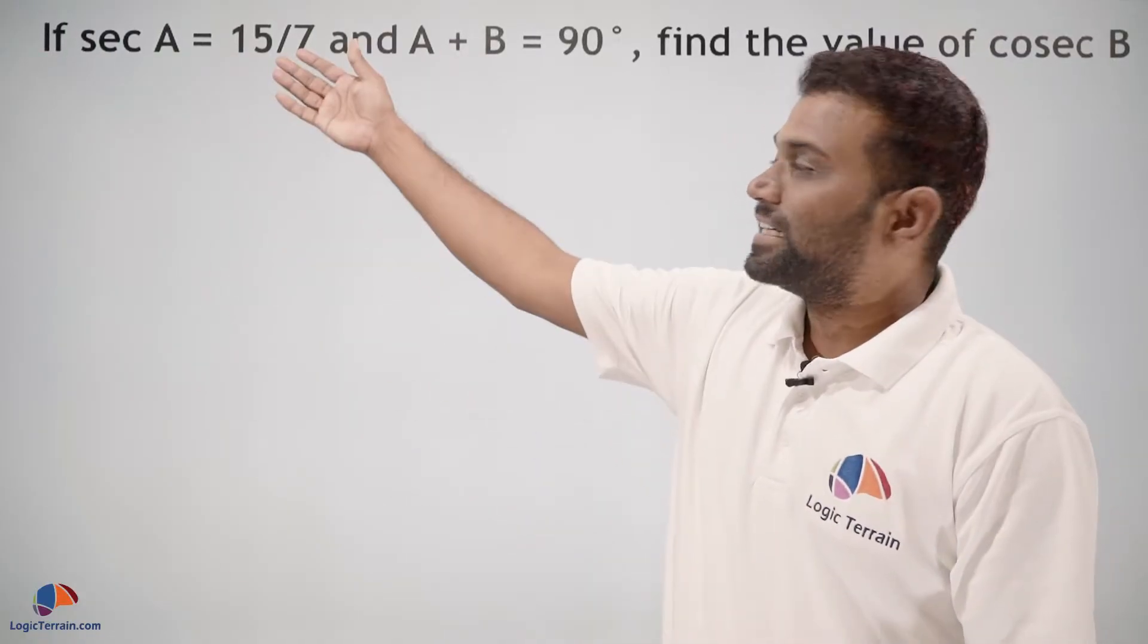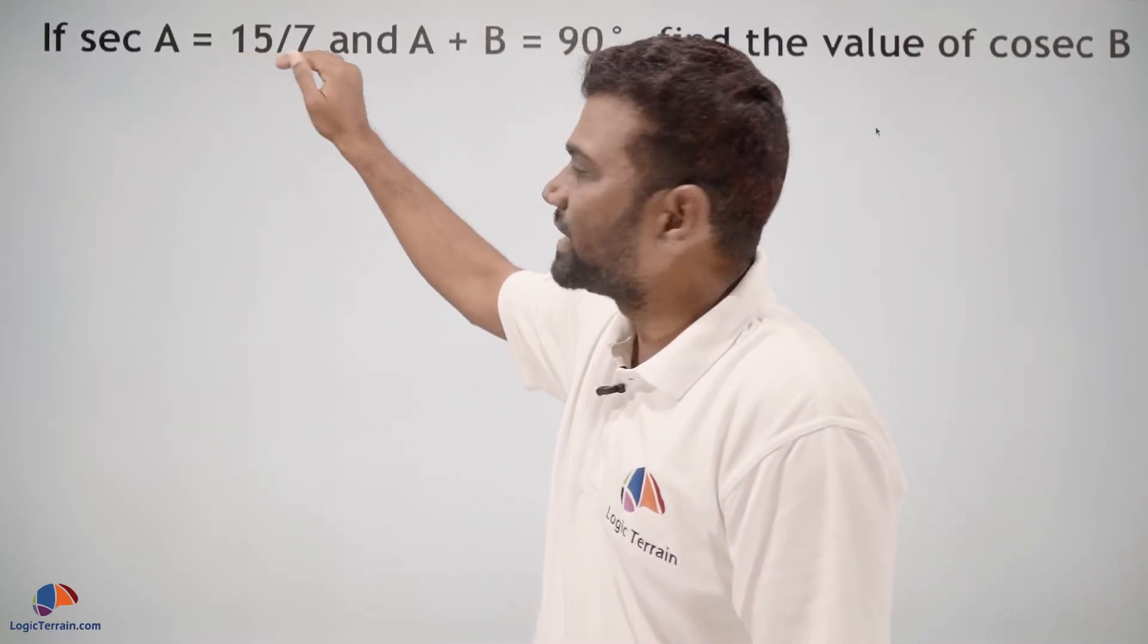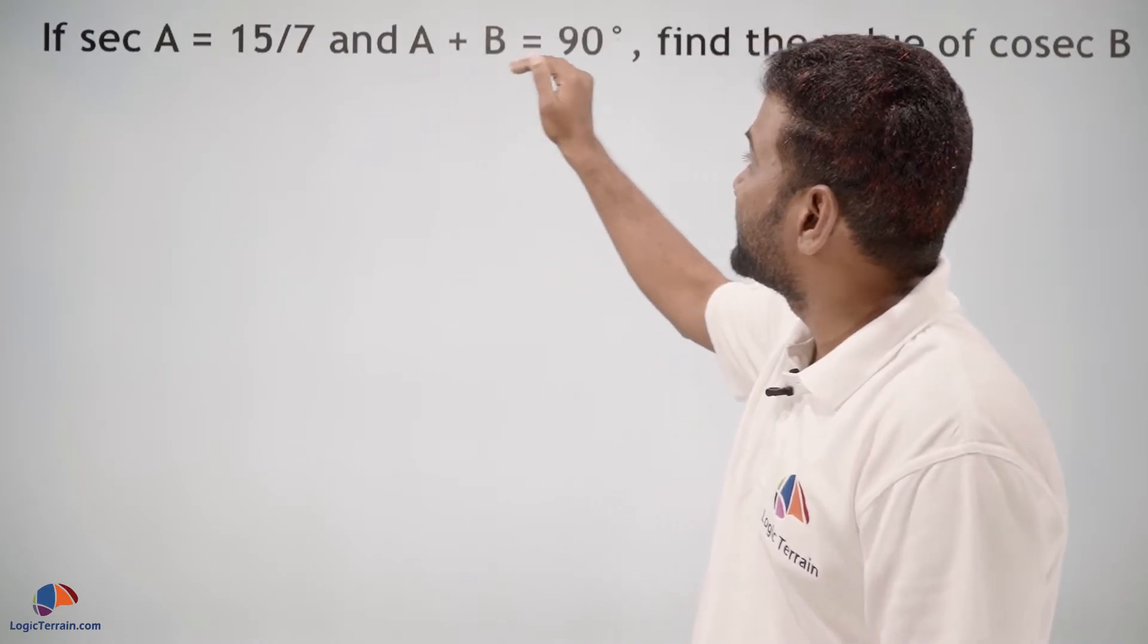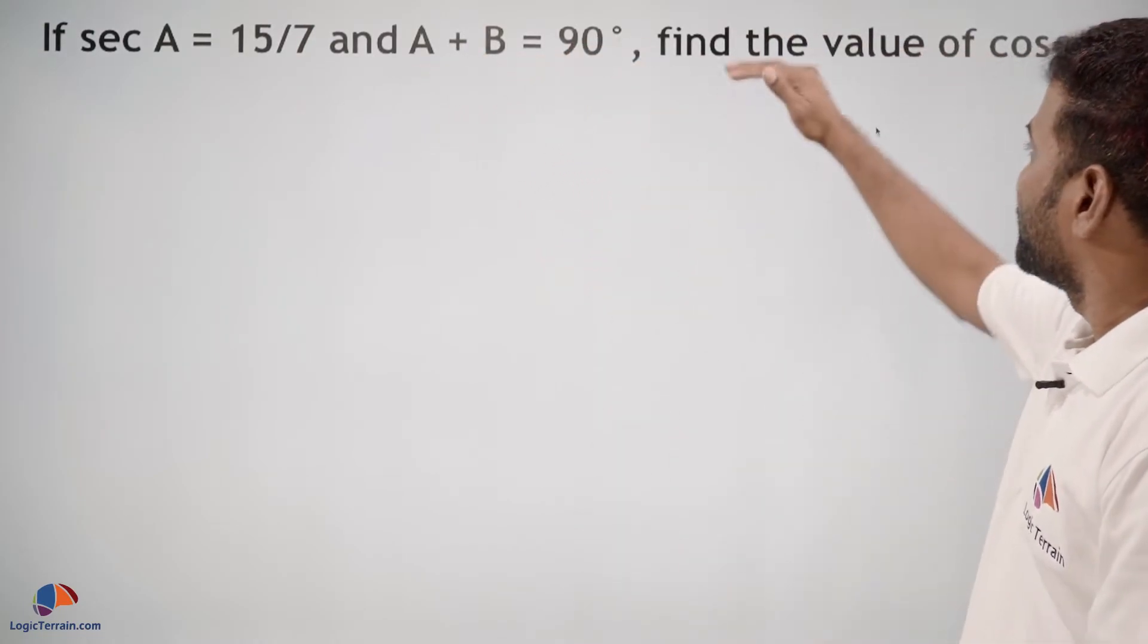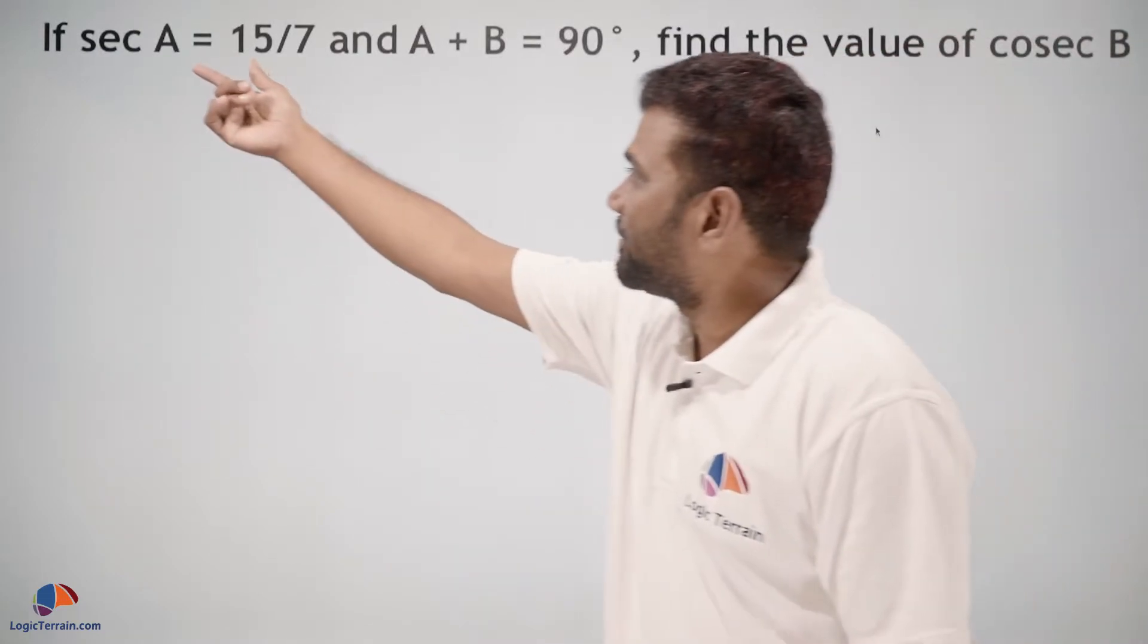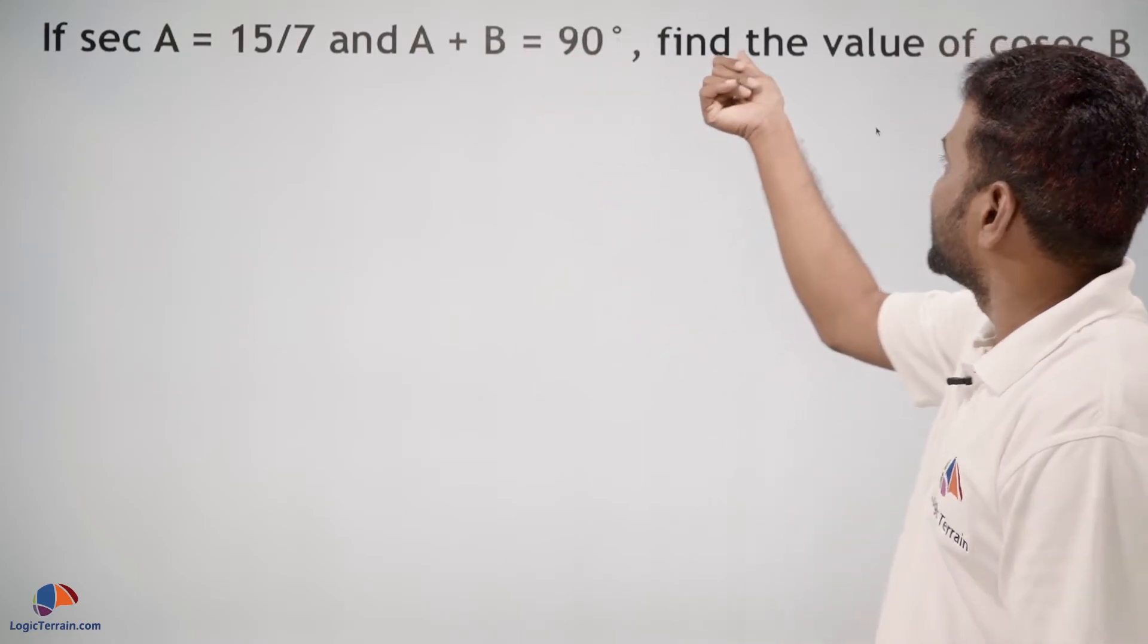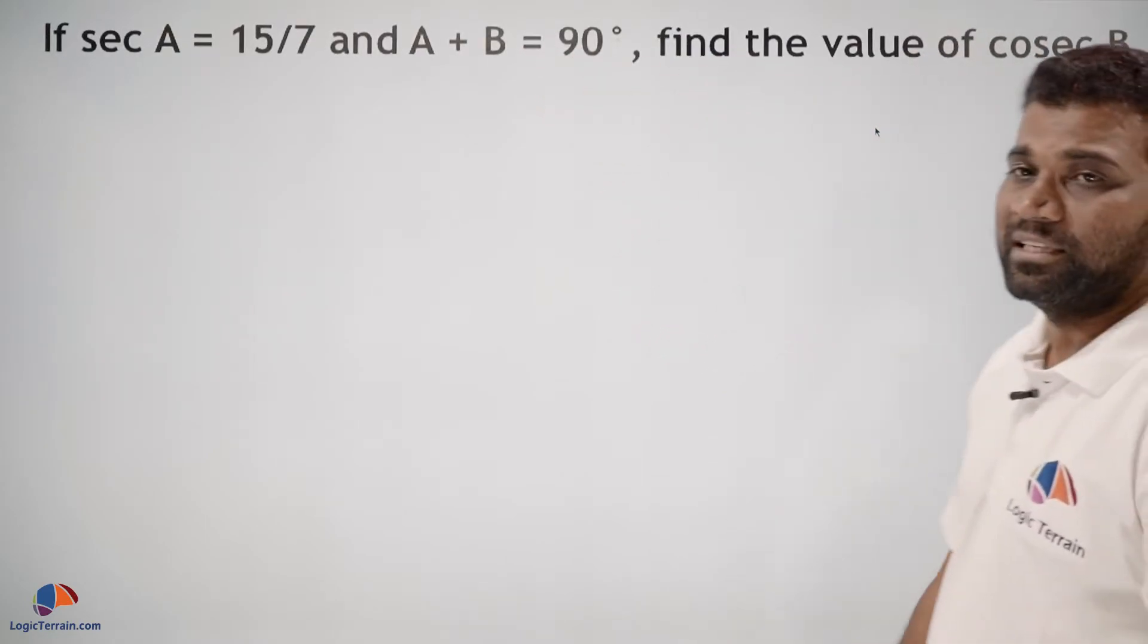Hello dear students. Here is an important question: If sec A = 15/7 and A + B = 90°, find the value of cosec B. We have given sec A value as well as A + B = 90°, then we need to find the value of cosec B.